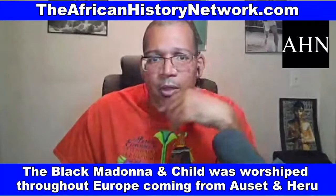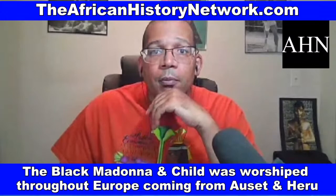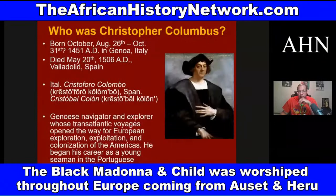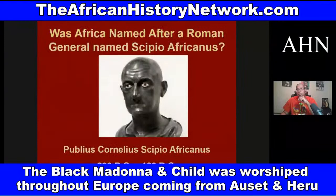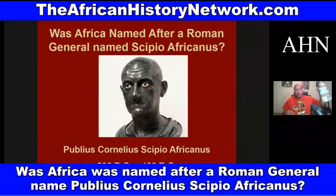Publius Cornelius Scipio Africanus — a lot of people still mistakenly think that Africa was named after this Roman general, but that's false. Number one, his surname — his family's last name — was not Africanus; it was Scipio. He lived from 236 BC to 183 BC. The word Africanus is Latin. If you look at Cassell's Latin English Dictionary, 2002 edition, page 11, in the entry for Afer — A-F-E-R — it says Africanus means 'belonging to Africa.'